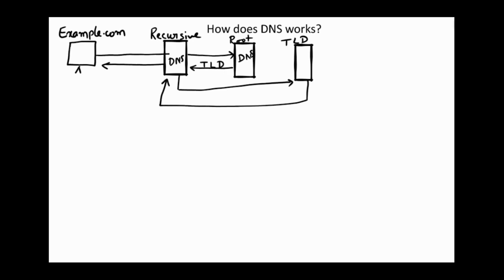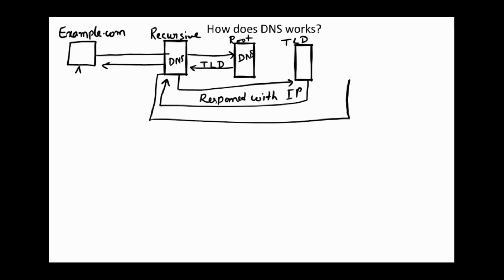The TLD server will respond back to the recursive DNS server with the IP address information. Now the recursive DNS server has the IP address, and it will next send a query to the actual server — the name server. So the recursive DNS server sends a query to the name server.